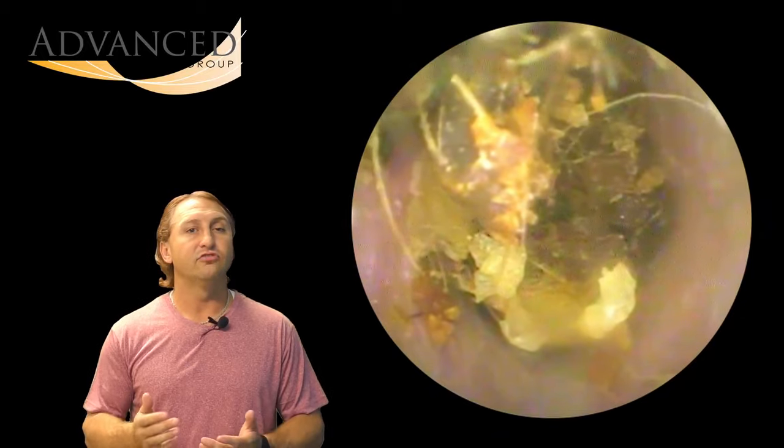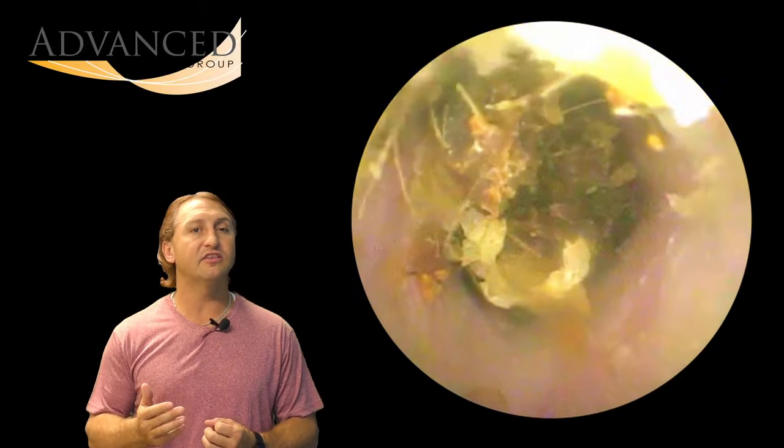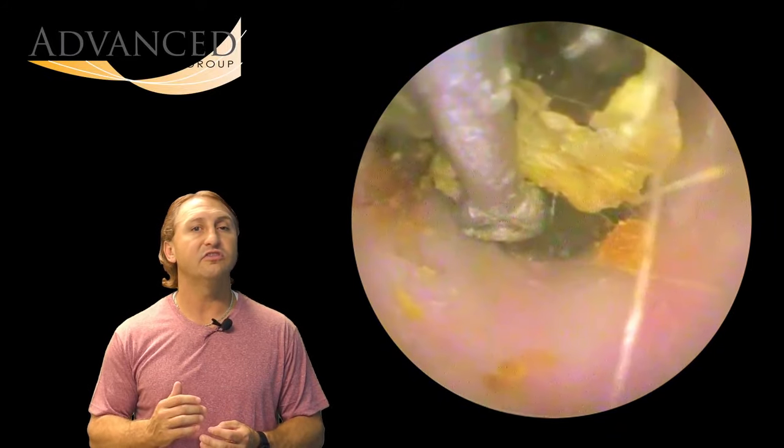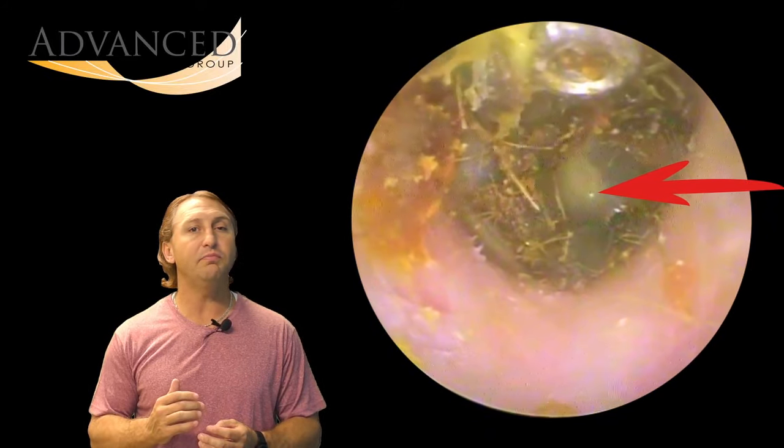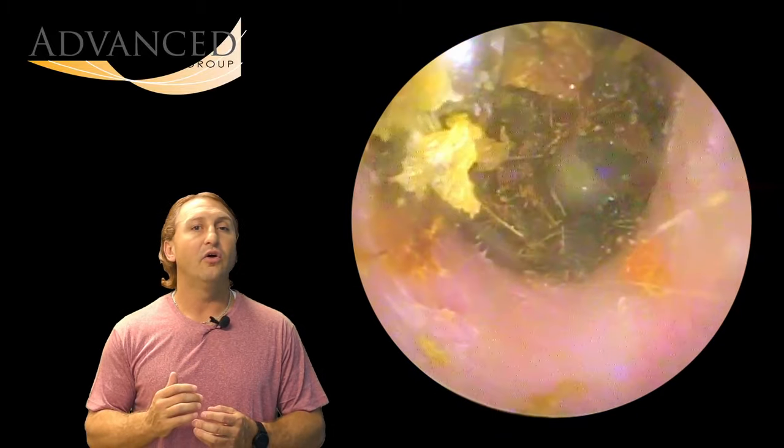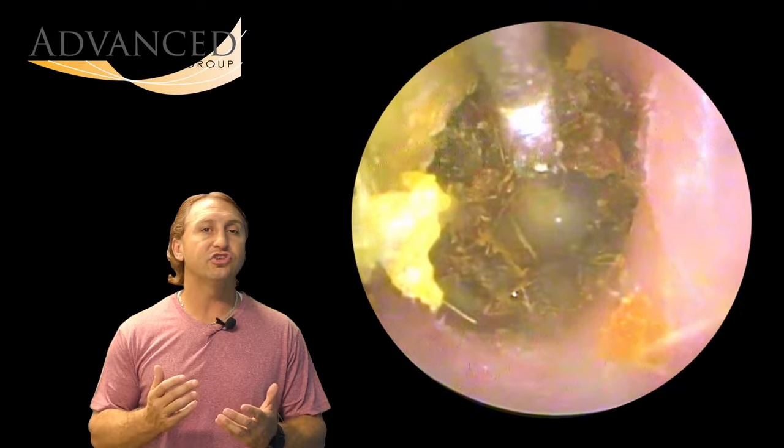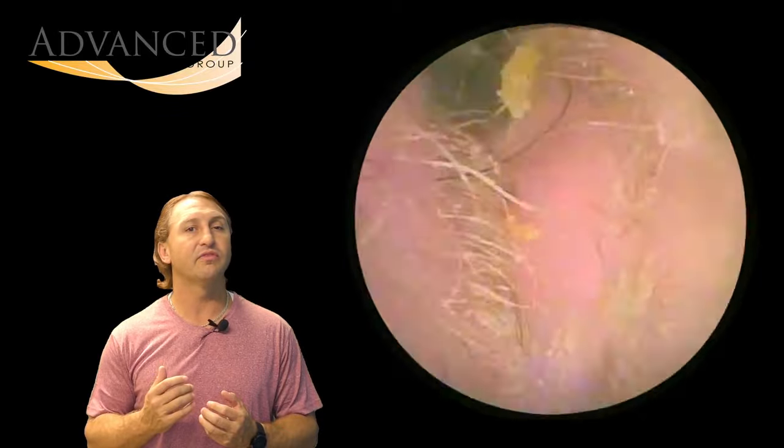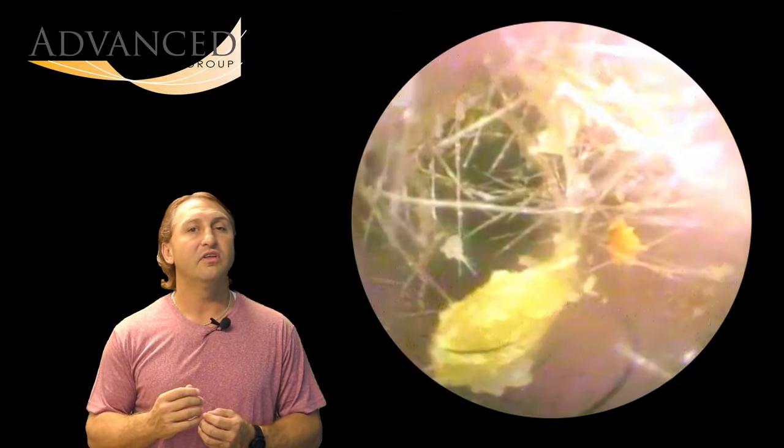So we're going to first use the curette to try to pick this wax up and at least give us a little view of the eardrum. Now you can see as we lift it up, we get a little peek at the eardrum right there, right below the curette. So now we're going to switch to a more angled version in order to use that angle to help pull the earwax out.